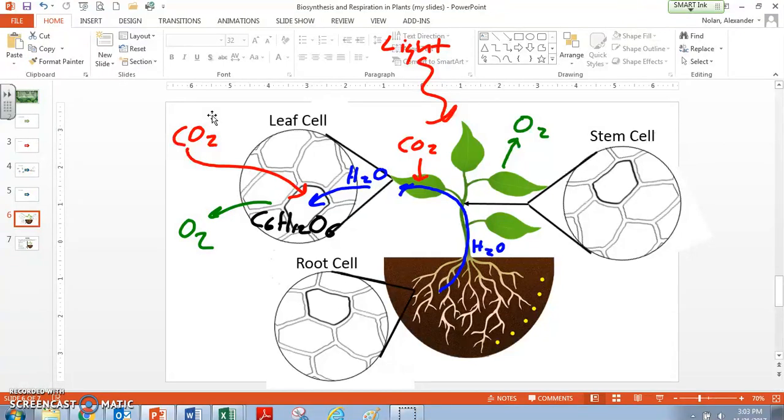So we have oxygen on our way out of our plant as well. This is the idea behind photosynthesis. This is going on in our leaves. But remember, photosynthesis is not the only thing happening in our plant.